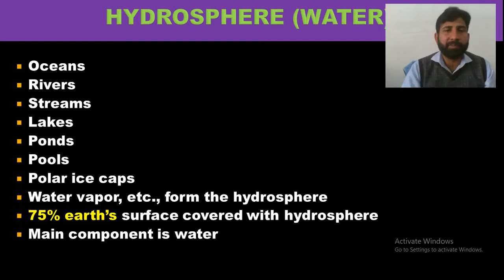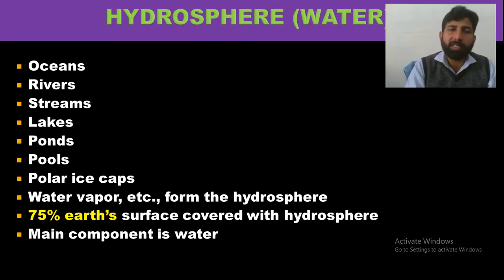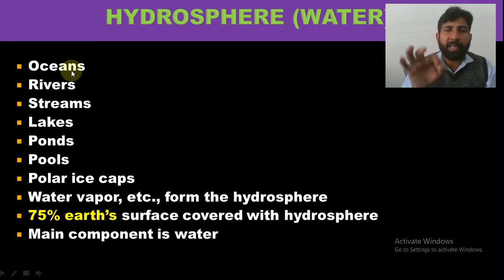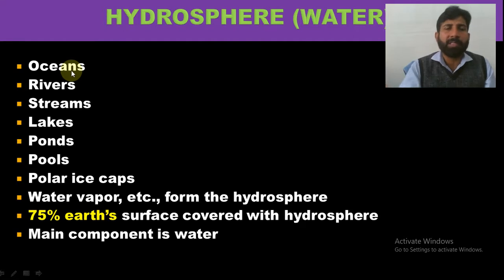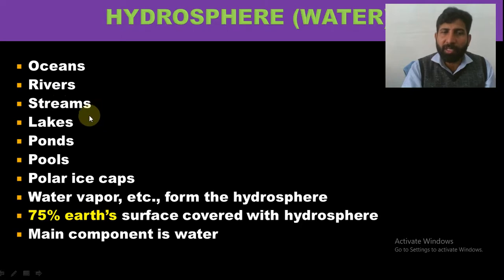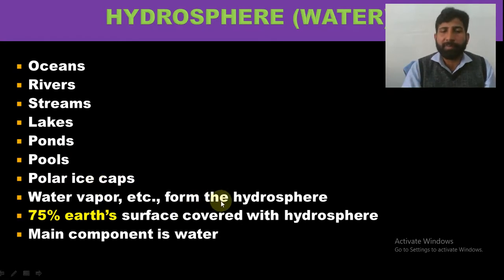So it is a very important lesson for us: we have to save water to save life. The major reservoirs of the hydrosphere — that is, water — are the oceans. Remember, 71% of the Earth's surface is occupied by water bodies in the form of oceans, rivers, streams, lakes, pools, polar ice caps, and water vapor, which together form the hydrosphere. About 75% of the Earth's surface is covered by the hydrosphere.